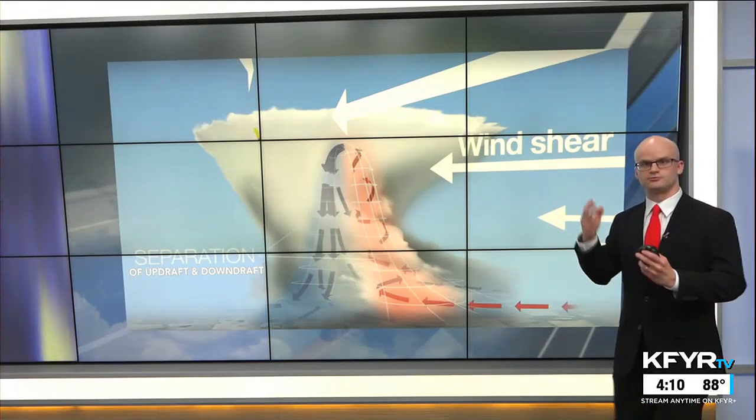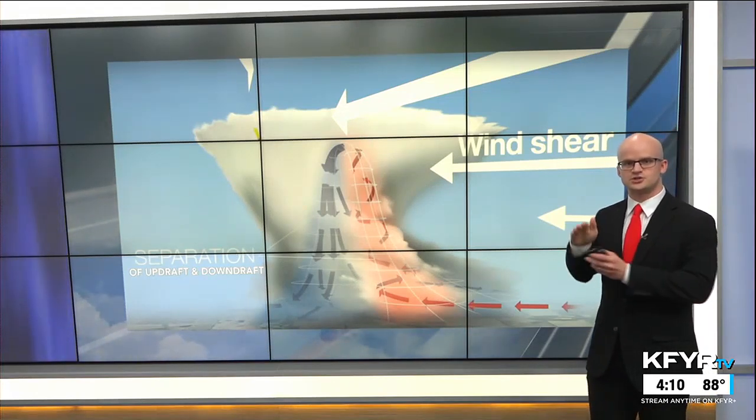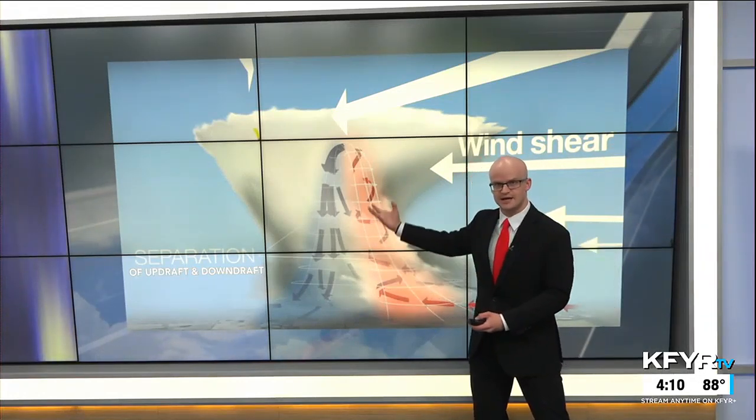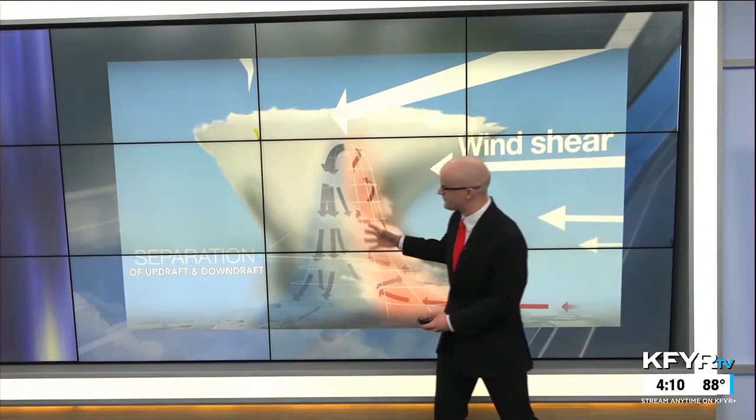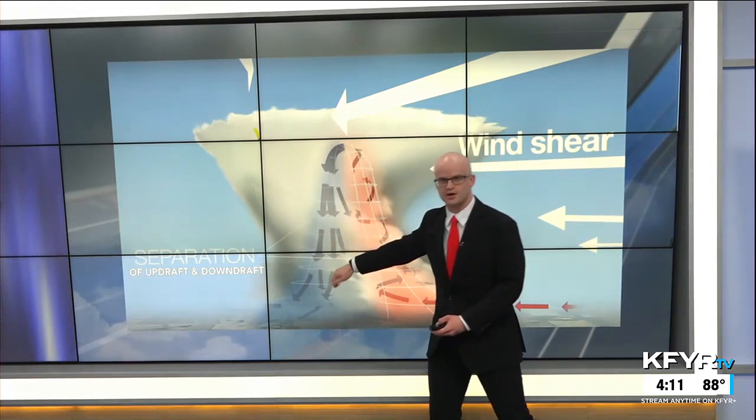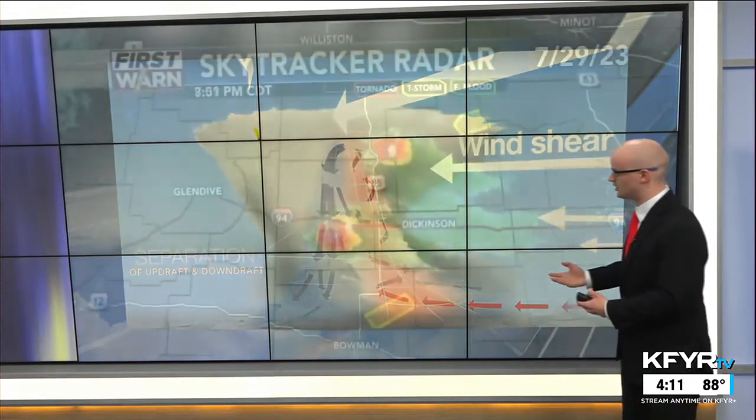What causes that internal rotation within the thunderstorm? The primary cause is wind shear — the varying wind direction and speed with height. That causes the updraft, the rising air within the thunderstorm cloud, to be displaced or separated from the downdraft, the sinking rain-cooled air, which allows the thunderstorm to sustain itself and last a lot longer.